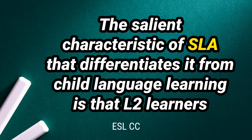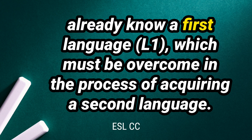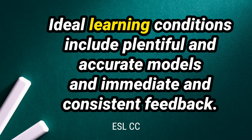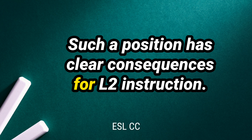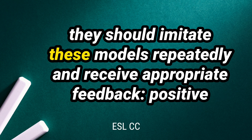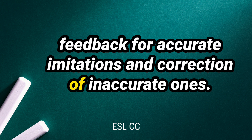The salient characteristic of SLA that differentiates it from child language learning is that L2 learners already know a first language, which must be overcome in the process of acquiring a second language. This process is difficult, but can be facilitated by appropriate instruction. Ideal learning conditions include plentiful and accurate models and immediate and consistent feedback. Learners should be exposed to a large number of target examples of language, imitate these models repeatedly, and receive appropriate feedback — positive feedback for accurate imitations and correction of inaccurate ones.